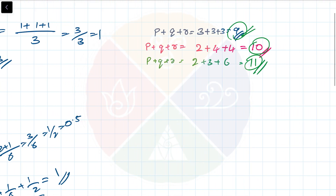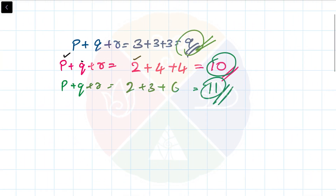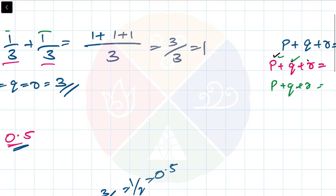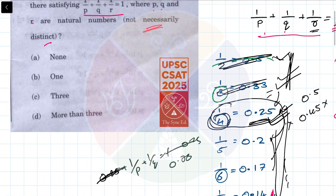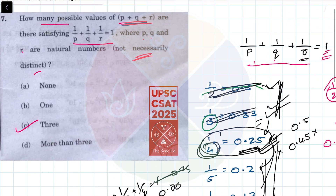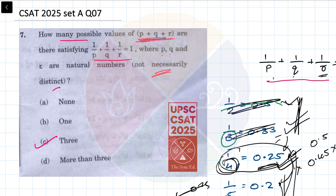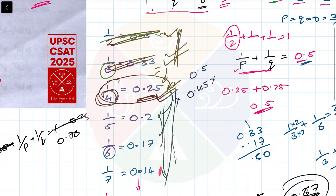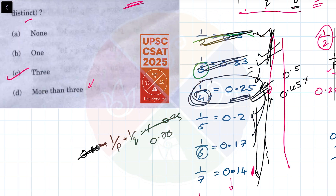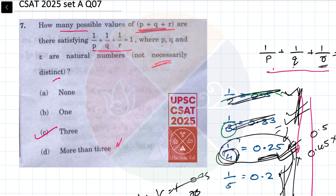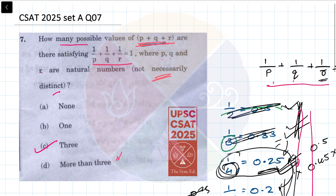So we only found three combinations: P+Q+R = 9 (from 3,3,3), P+Q+R = 10 (from 2,4,4), and P+Q+R = 11 (from 2,3,6). The order doesn't matter since it's addition. There is nothing else that can happen. So the answer to this problem is 3 — there are exactly 3 possible values of P plus Q plus R. I wouldn't do this problem in an examination because it takes 5-7 minutes of careful analysis.